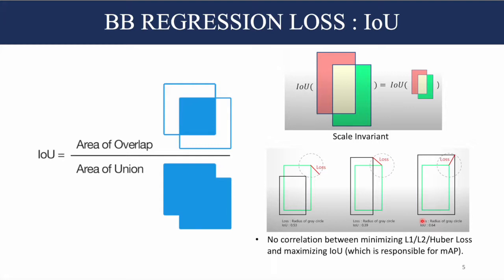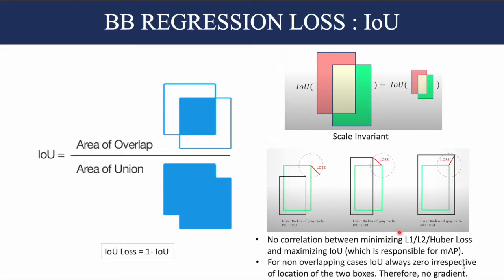People using L1, L2, or Huber loss as a bounding box regression loss decided to use IOU as a loss instead. The IOU loss was defined as 1 minus IOU. However, for non-overlapping cases, the IOU will always be 0 regardless of the location of the two boxes, resulting in no gradient flowing and therefore the model will not be able to converge.